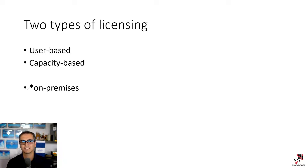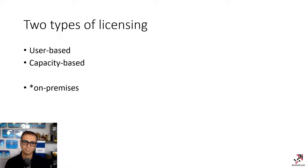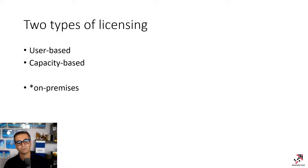User-based licenses are licenses that you pay per user, usually per month. For example, if you have five users, you pay for each of those on a monthly basis. Capacity-based licensing is different — you purchase a dedicated capacity, which you can then assign multiple users to, and you pay for that capacity. But with that capacity, sometimes you also need user-based licensing as well. For example, with a premium capacity license, you would also need to have some Power BI Pro licenses.